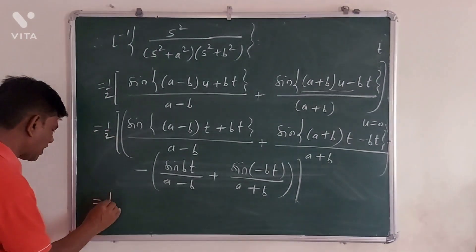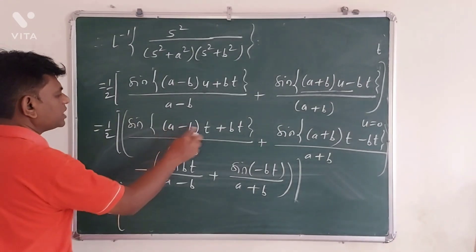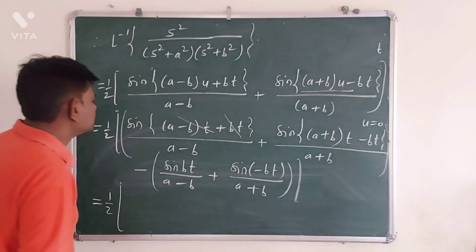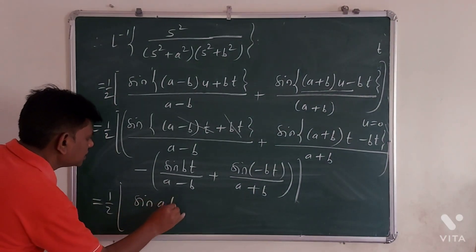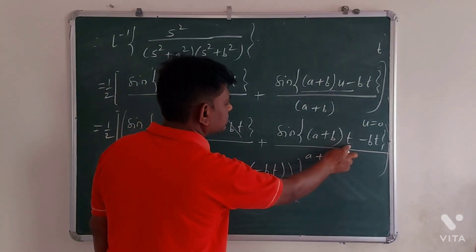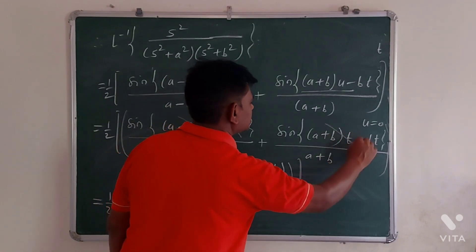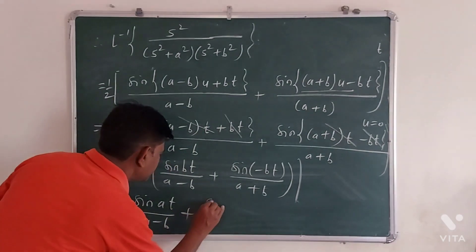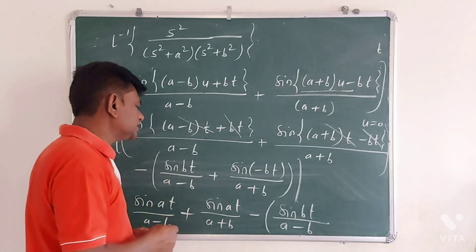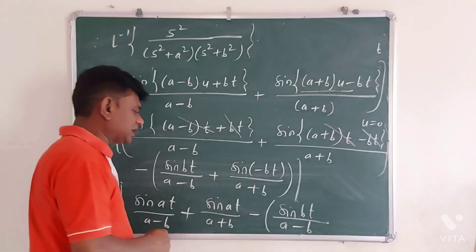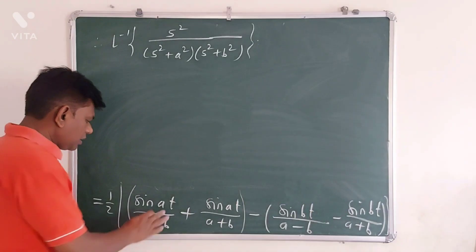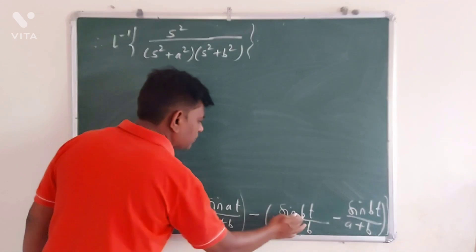Now simplifying: at the upper limit, in the first term, (a minus b)t plus bt gives at minus bt plus bt, so the bt terms cancel, leaving sin(at). In the second term, (a plus b)t minus bt gives at plus bt minus bt, so the bt cancels, leaving sin(at). Now sin(at) is common in one group and sin(bt) is common in another.